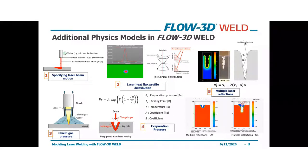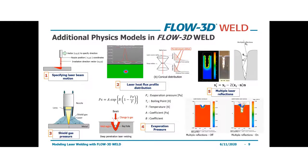Laser reflections can also be included and are important for accurately predicting the evolution of the keyhole and the effects of multiple laser reflections on local temperatures. In this example, we can see how the consideration of multiple laser reflections has a noticeable impact on the penetration depth of the keyhole.